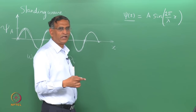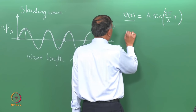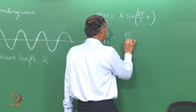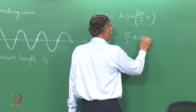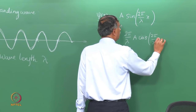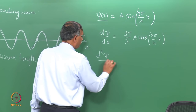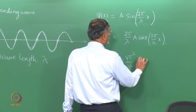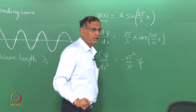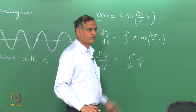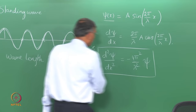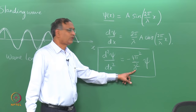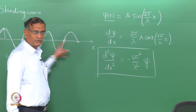When you differentiate psi twice, it satisfies the derivative equation. The first derivative d(psi)/dx = (2π/λ) · A cos(2π/λ · x), and the second derivative d²(psi)/dx² = −(4π²/λ²) · psi(x), because differentiating again brings back sin(2π/λ · x), which is the same as psi(x). Therefore the standing wave satisfies the differential equation d²(psi)/dx² = −(4π²/λ²) · psi.